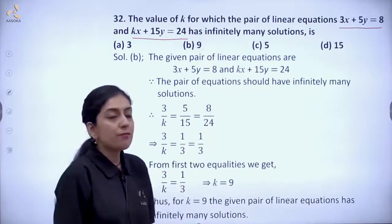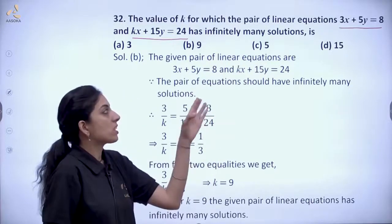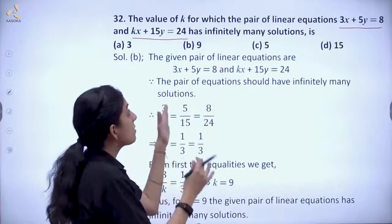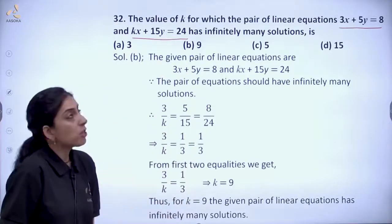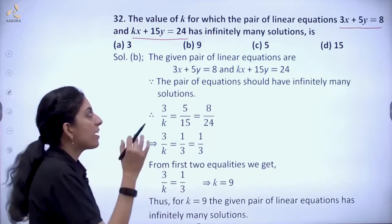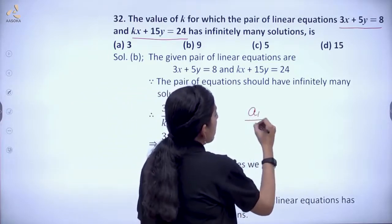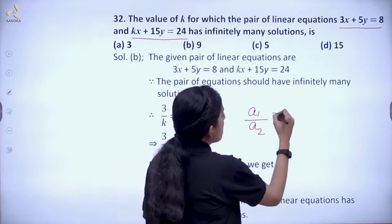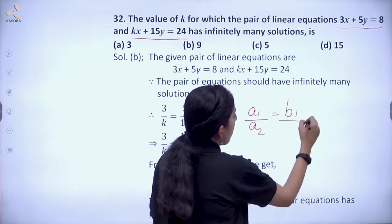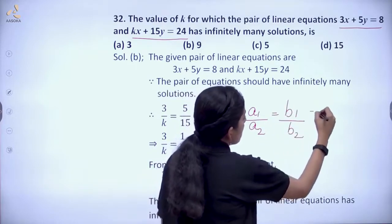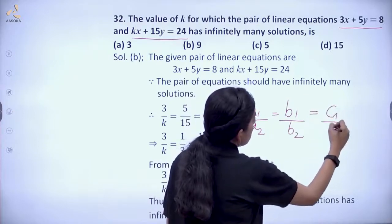For infinitely many solutions, what is the condition? a1 upon a2 is equal to b1 upon b2 is equal to c1 upon c2. This is the condition for infinite solutions.